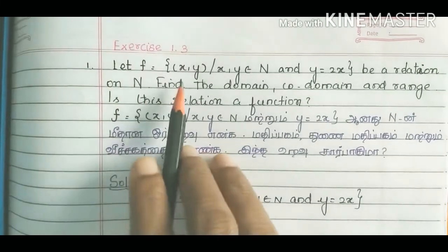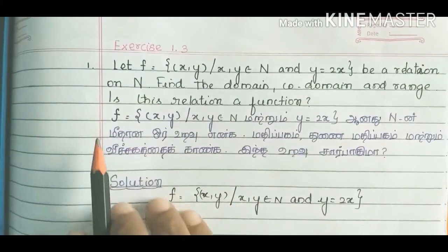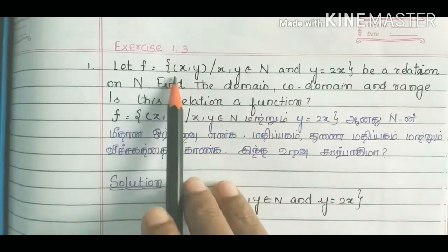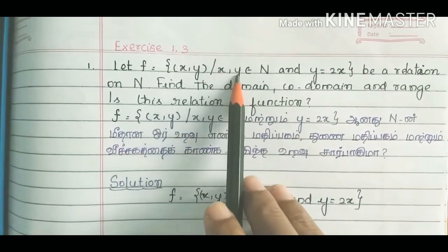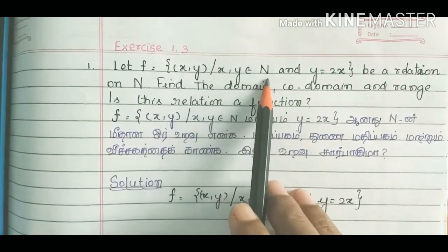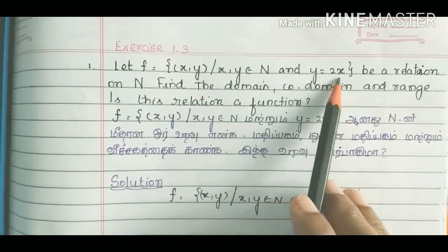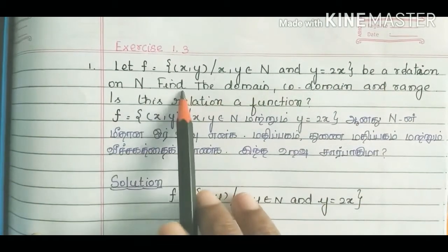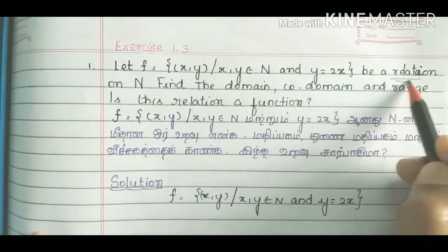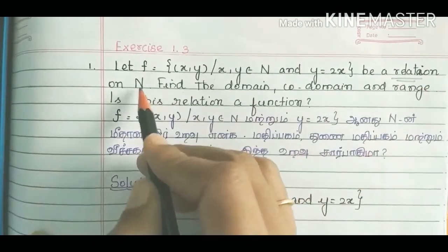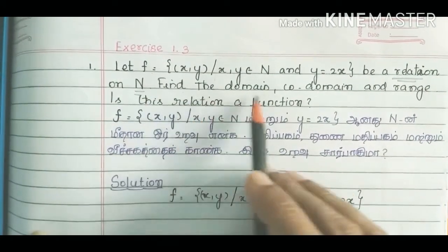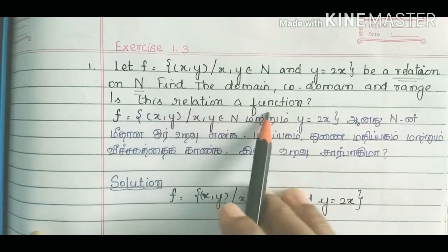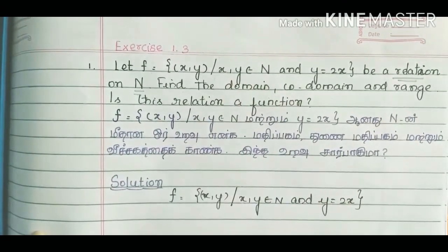Hi students. Now Exercise 1.3 — we will first look at f equal to the set (x, y) such that x, y belongs to natural numbers and y is equal to 2x. This is a relation on N, the natural numbers. Find the domain, co-domain and range. Is this relation a function?